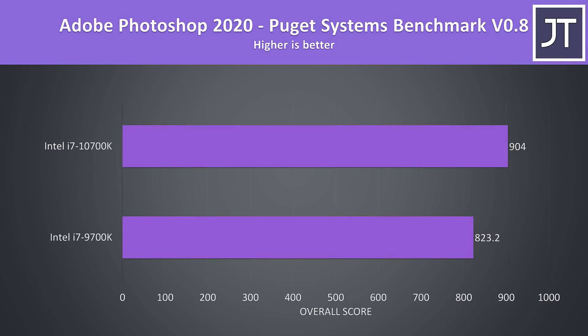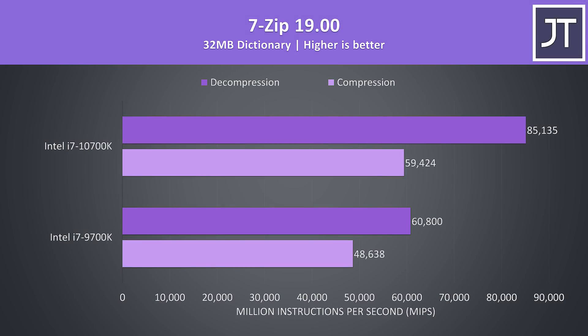Adobe Photoshop was tested with the Puget Systems benchmark tool, and the 10700K was reaching a 10% higher score here. This test seems to depend more on clock speed than additional cores, which explains why it's not as high as the other multicore tests. 7-Zip was used to test compression and decompression speeds, and the improvements from the 10700K are helping out a lot here — there was a 22% improvement to compression with the extra threads, while decompression was 40% faster.